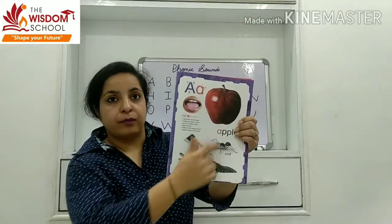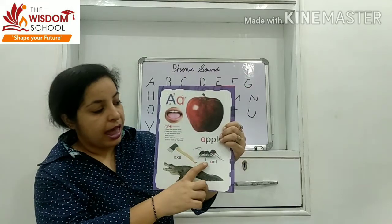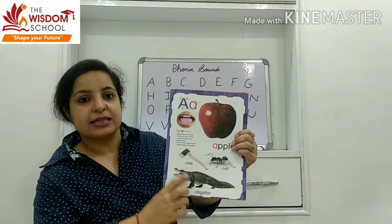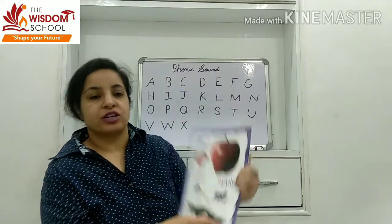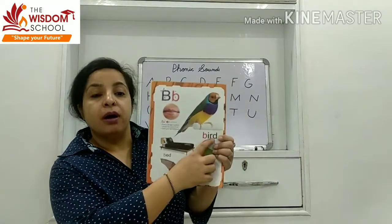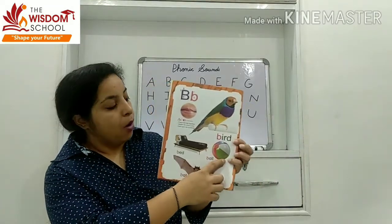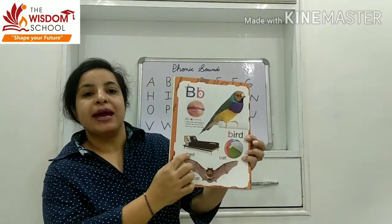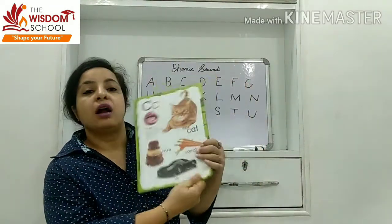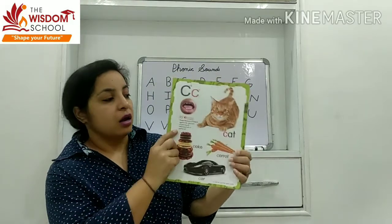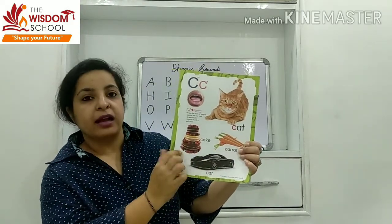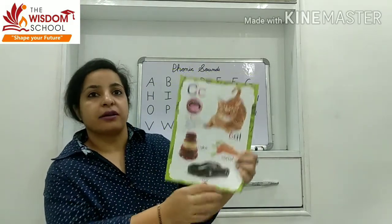A — apple, ant, axe, alligator. B — bug, bird, ball, bit, bat. C — cat, carrot, cake, car.